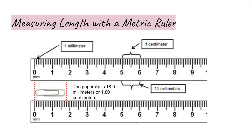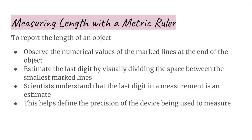On a metric ruler, each individual line represents a millimeter, written as two lowercase m's. Each millimeter is one tenth of a centimeter, meaning that 10 millimeters make up one centimeter. The numbers on the ruler represent centimeters (cm). To report the length of an object, observe the numerical values of the marked lines at the end of the object, then estimate the last digit by visually dividing the space between the smallest marked lines. Scientists understand that the last digit in a measurement is an estimate — this helps define the precision of the device.